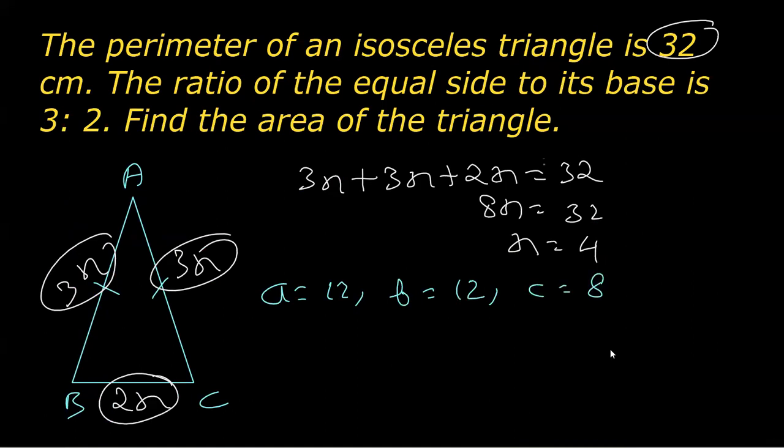So once we get the value of a, b, c, now we can find the area using Heron's formula. And in order to find the area in Heron's formula, we use s is equal to a plus b plus c divided by 2. So a plus b plus c is nothing but the perimeter. That is 32 over 2. So we got s is equal to 16 centimeter.